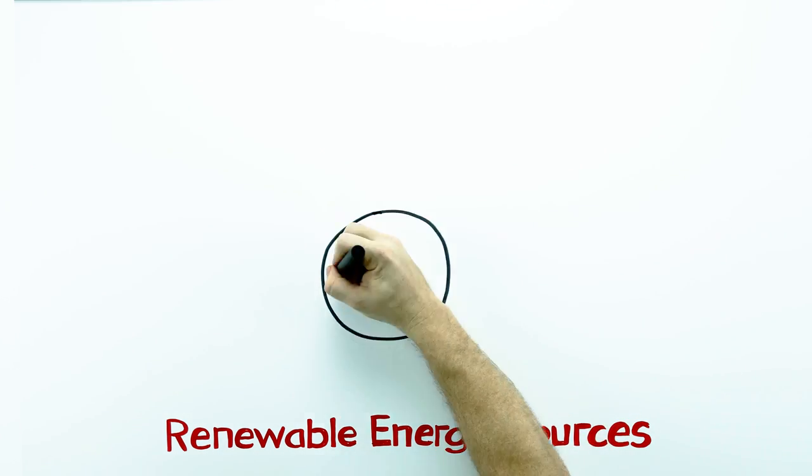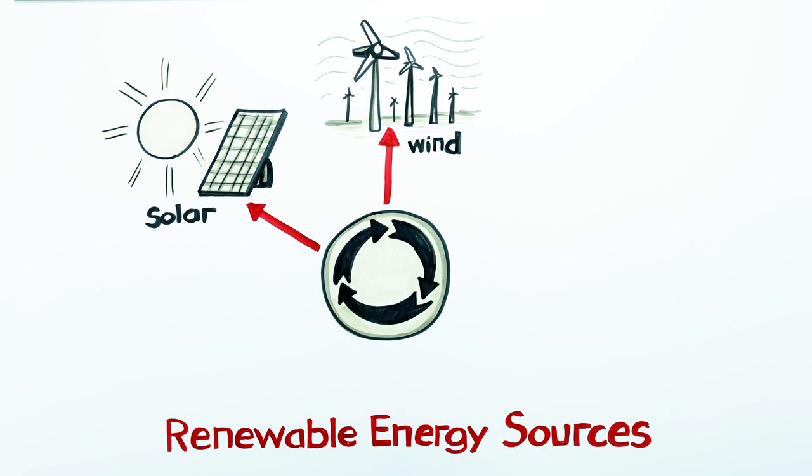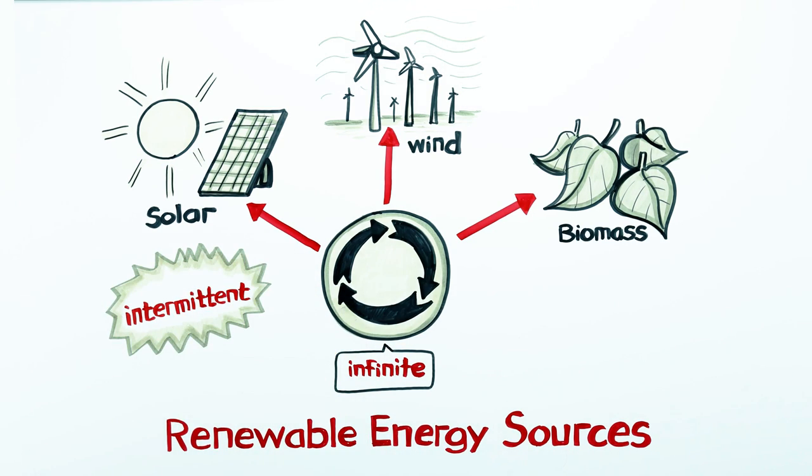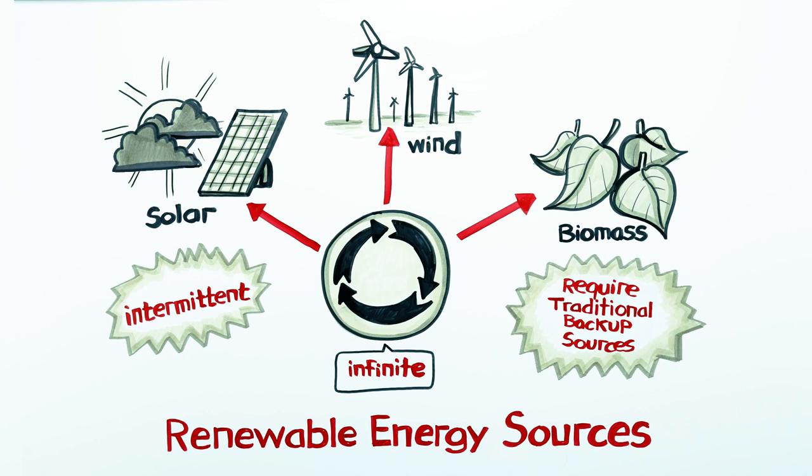There are also renewable energy sources like solar, wind, and biomass that have an infinite supply. Some of these resources are intermittent in nature. The sun doesn't always shine, and the wind doesn't always blow. Therefore they require backup sources to ensure a steady and sufficient flow of electricity.